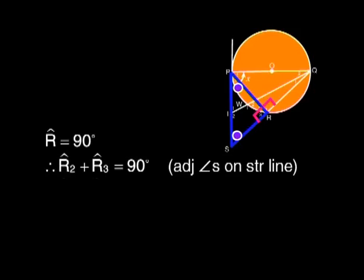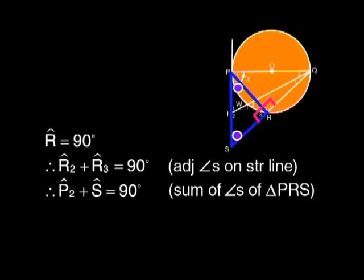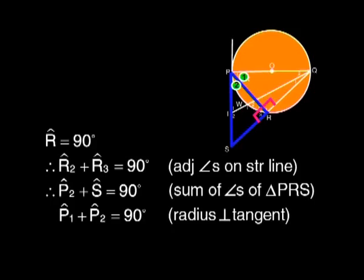Yes. There are adjacent angles on a straight line. But that means that in triangle PRS, the leftover angles will also equal 90 degrees, because the sum of the angles of a triangle is 180 degrees. So P2 plus S is 90 degrees. Now look at P1 plus P2. They also add up to 90 degrees, because the radius is perpendicular to the tangent PS. Very good.